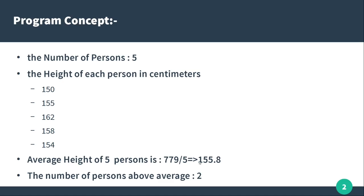The average height of the five persons is being printed — for example, 153.8 or 155.8. Heights like 162 and 150 are entered, and the average height comes out to around 155.8. Then we determine the number of persons above average height.